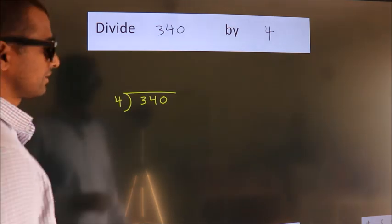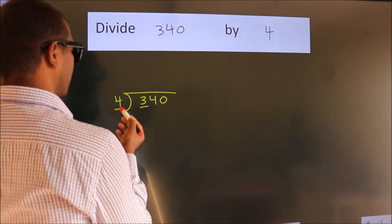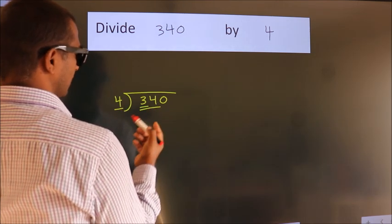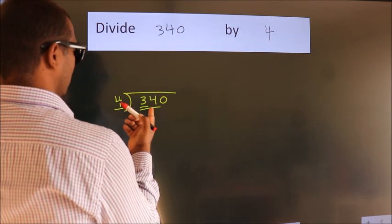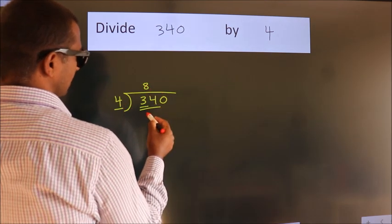Next, here we have 3. Here 4. 3 is smaller than 4, so we should take 2 numbers: 34. A number close to 34 in the 4 times table is 4 times 8, which is 32.